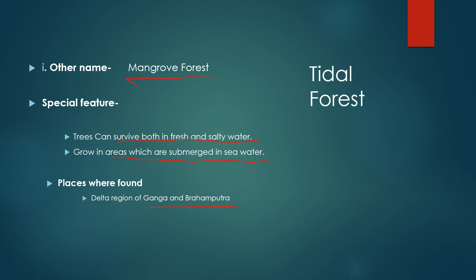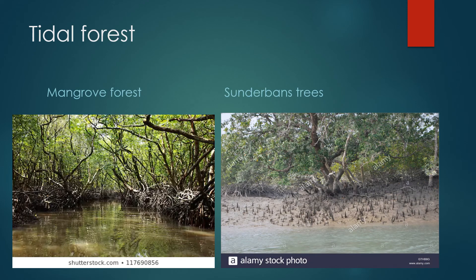Sundarban is a tidal forest formed because of the Sundari trees — the Sundarban forest is named after the Sundari tree. Here you can see a picture of the tidal forest showing trees growing on the side of the water, and the second picture is of the Sundarbans, mainly Sundari trees.